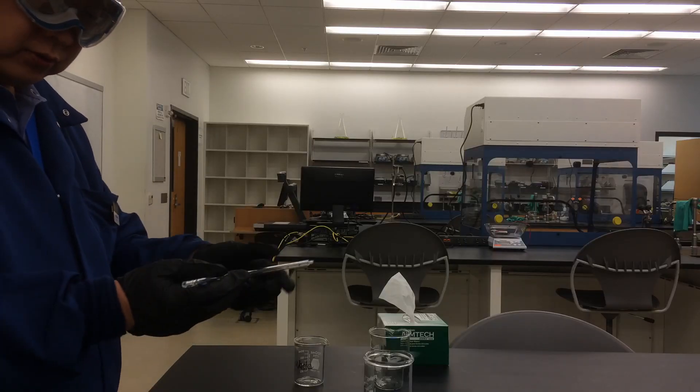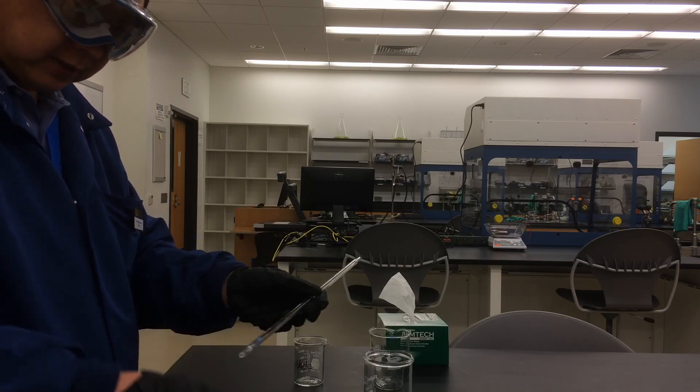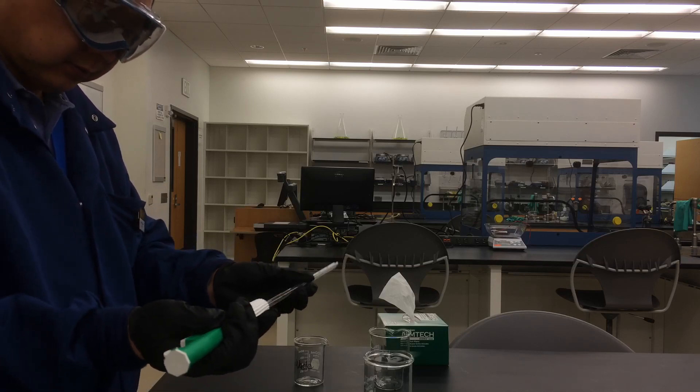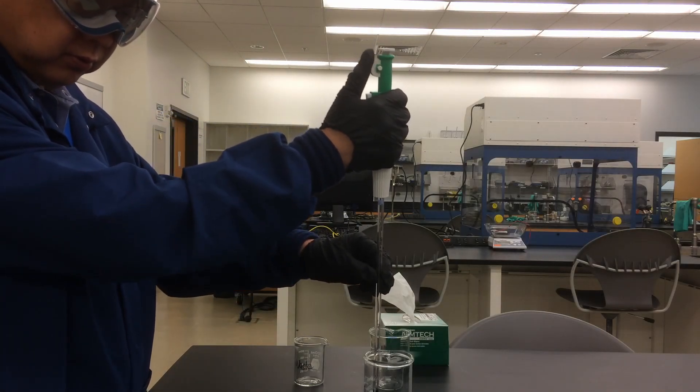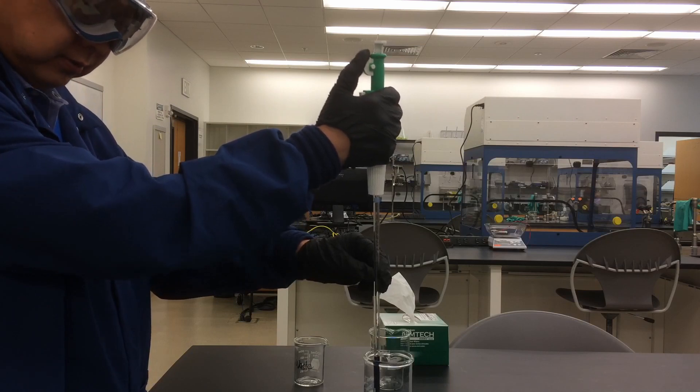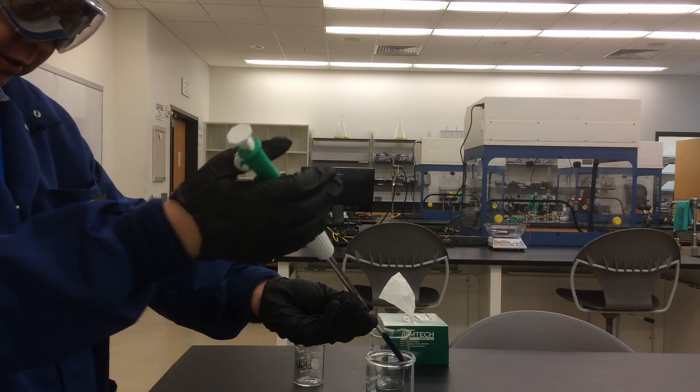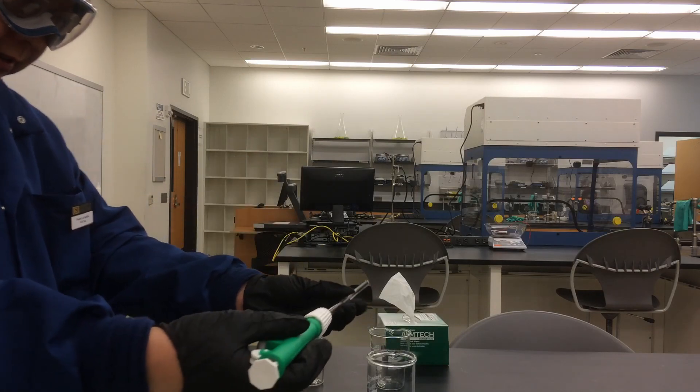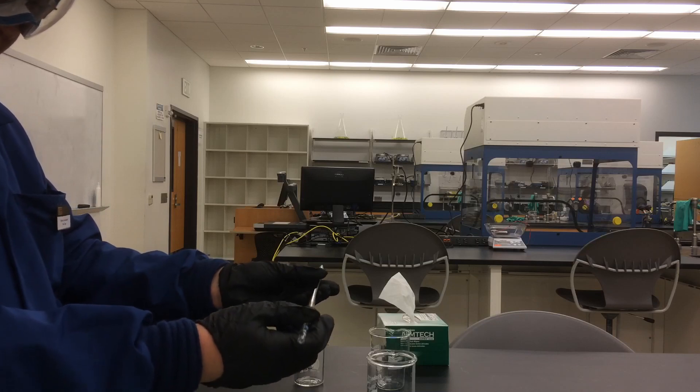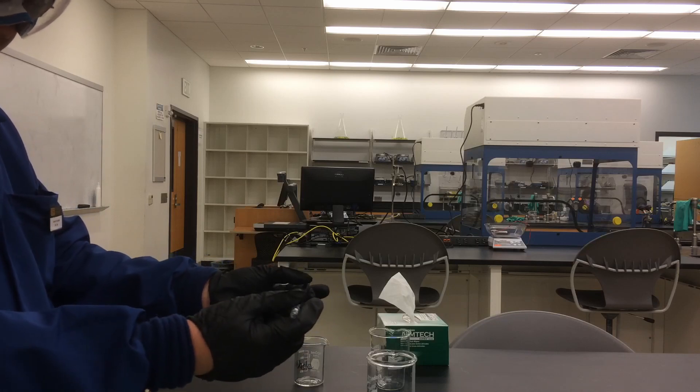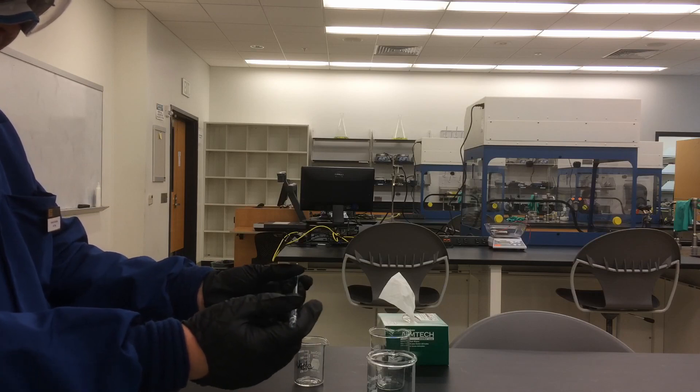Now, I'll show you how to use the graduated pipette. First, condition the pipette. Move the wheel to withdraw some solution, and turn the pipette on its side and rotate it, changing the angle to rinse the inside wall of the pipette.